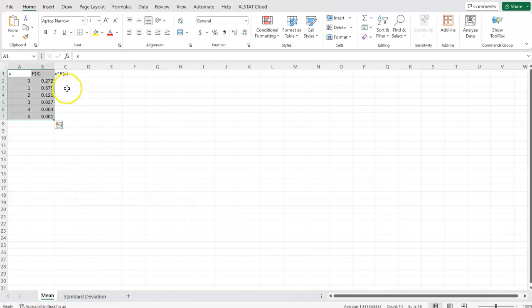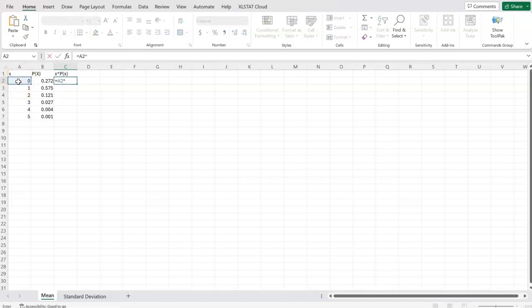All right, so I am in Excel and I have that data here. Each of my outcomes, 0, 1, 2, 3, 4, 5, and the probability of each outcome. And so in order to find the mean, the only thing I have to do is to multiply each of these, the outcome with this probability. So I'm going to hit equal here and I'm going to do this cell times this cell and hit enter. Then I'm going to click in this cell and I'm going to drag it down so that it will repeat that formula for each cell.